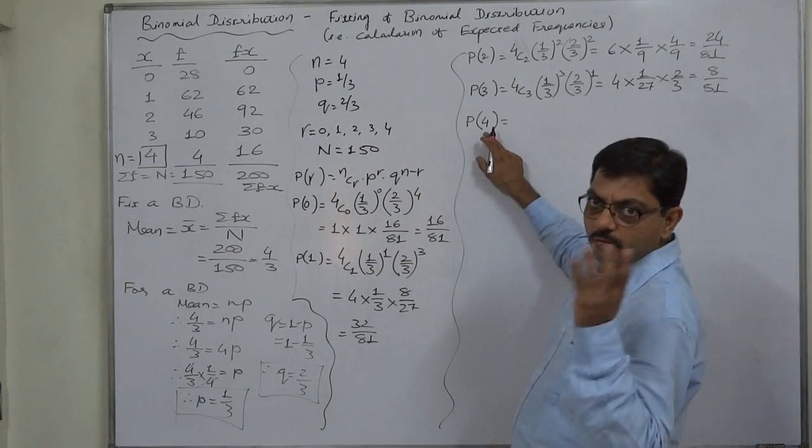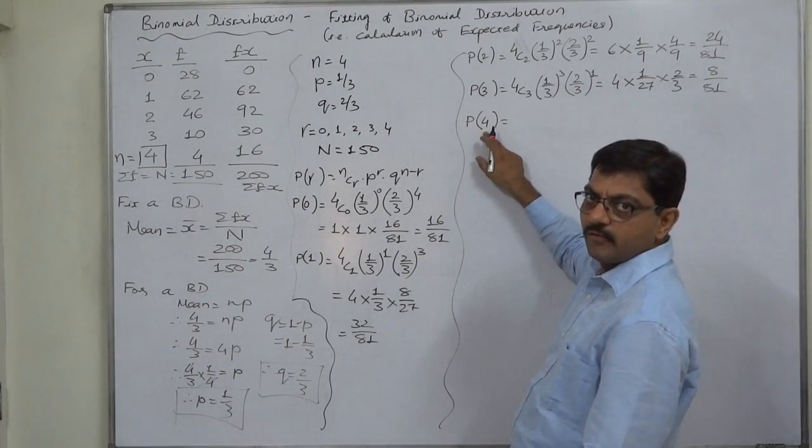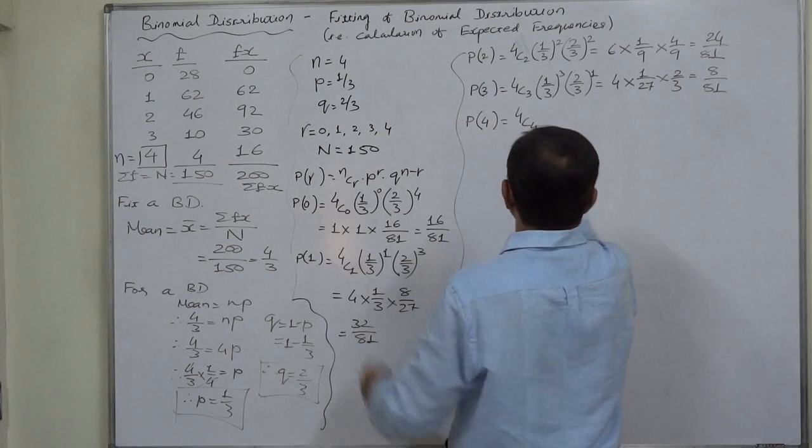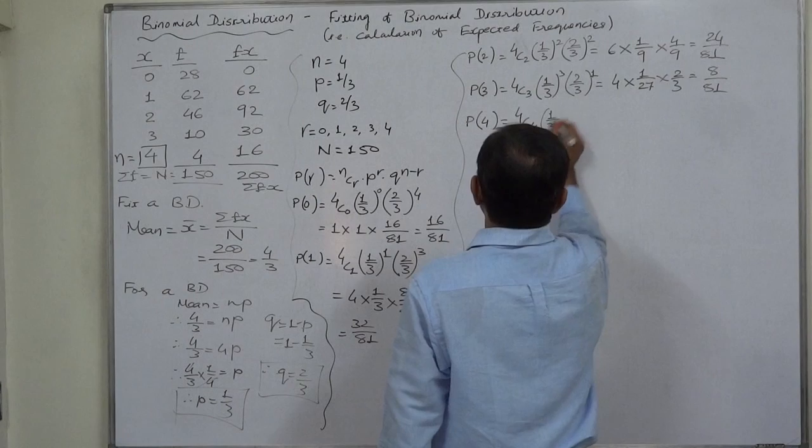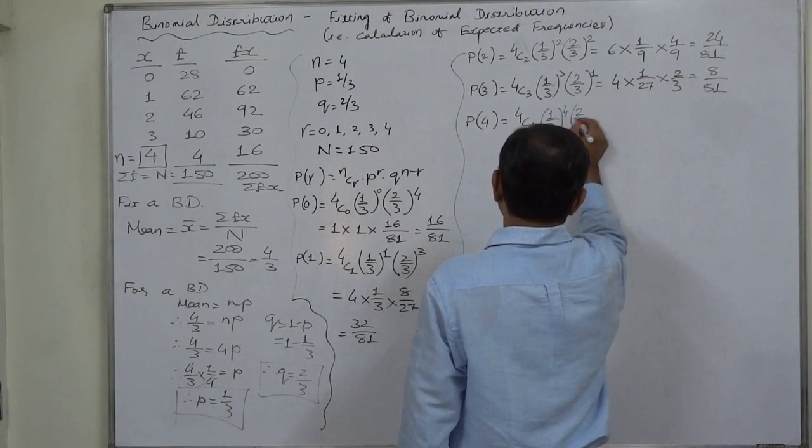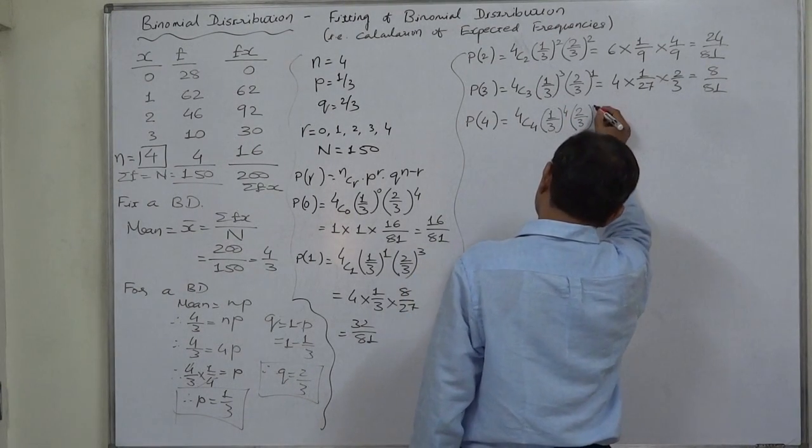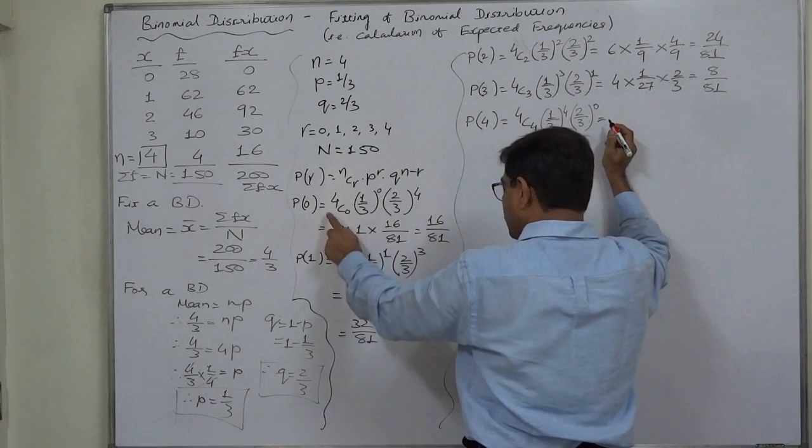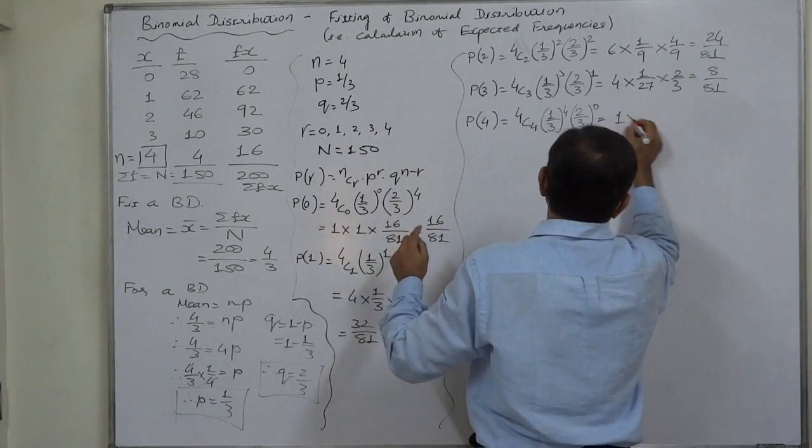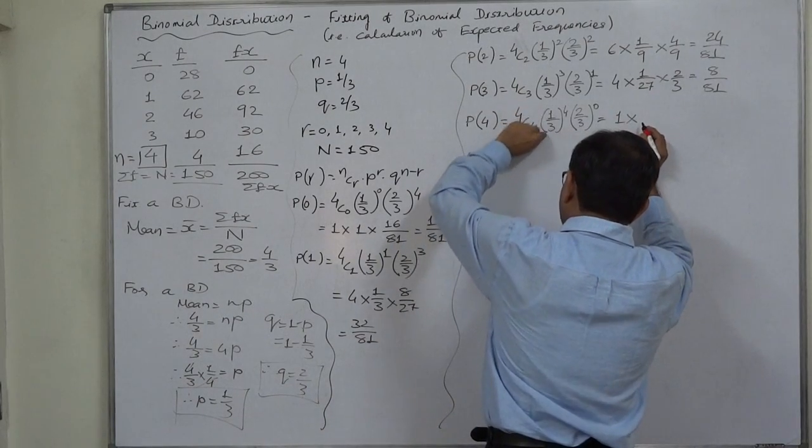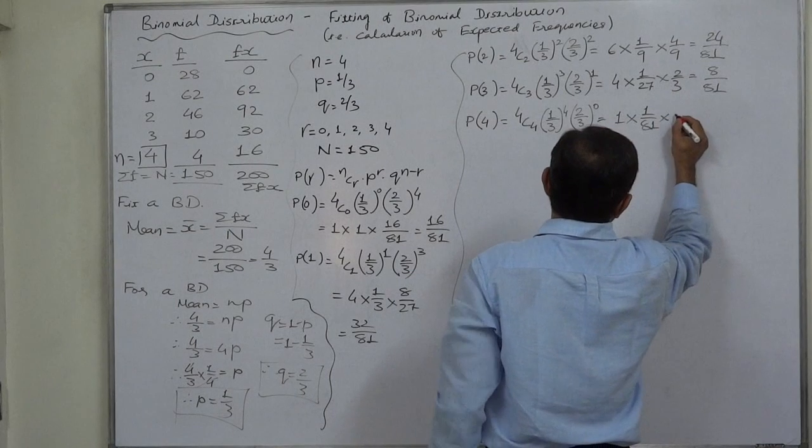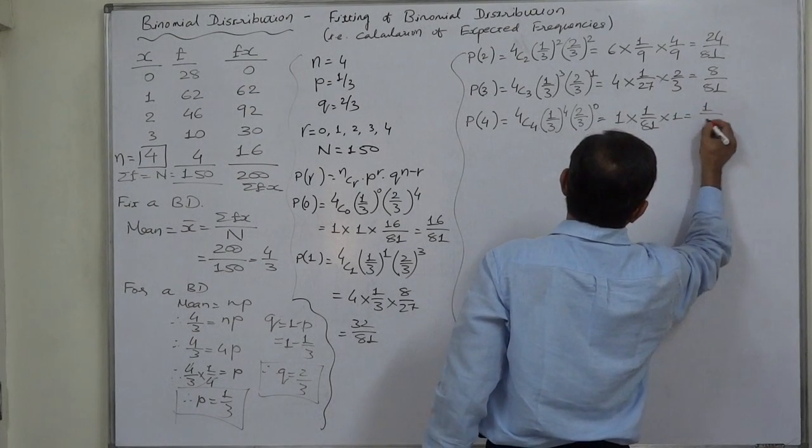Here, r is equivalent to 4, that is the highest possible value of r. 4C4, that will be equivalent to 4C0, 1 by 3 (that is p raised to 4) into 2 by 3 (that is q raised to 4 minus 4, 0). 4C4 equivalent to 4C0, that is 1, into 1 by 3 raised to 4 is 1 by 81, into 2 by 3 raised to 0 is 1. So it comes to 1 upon 81.